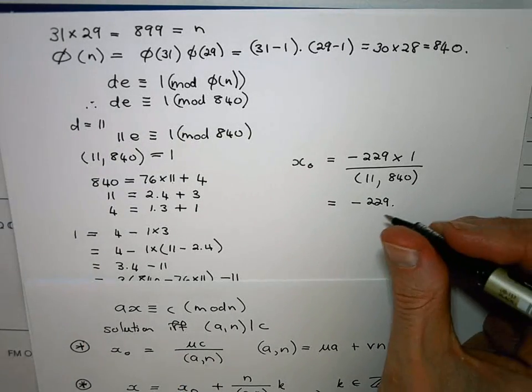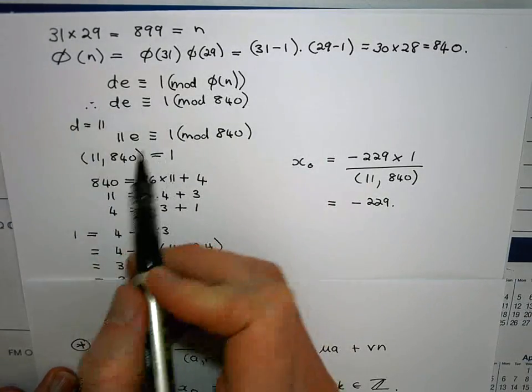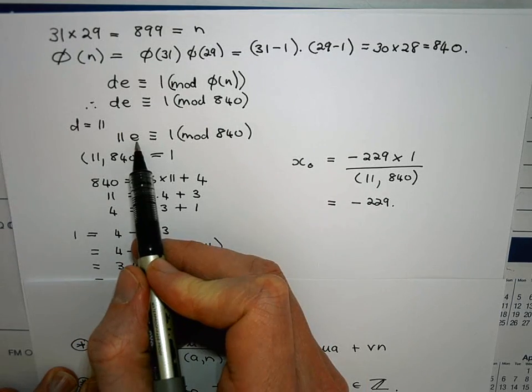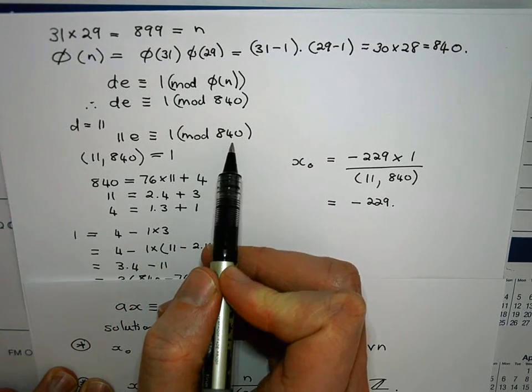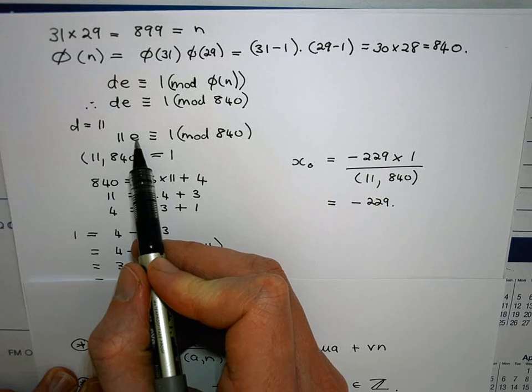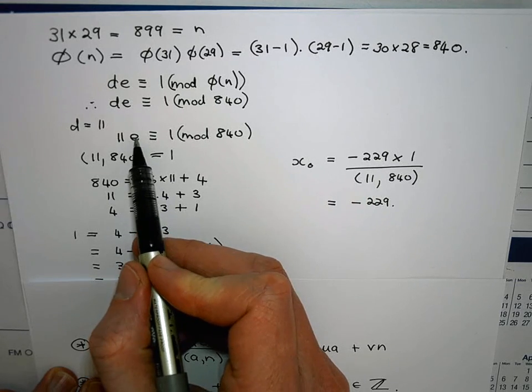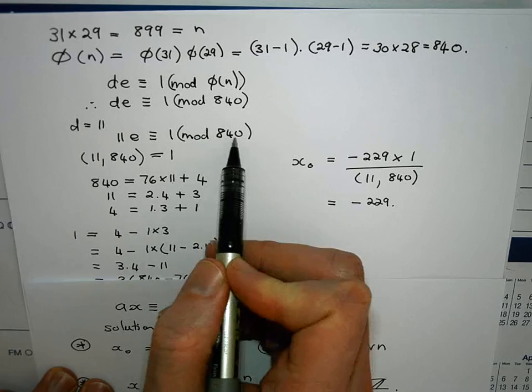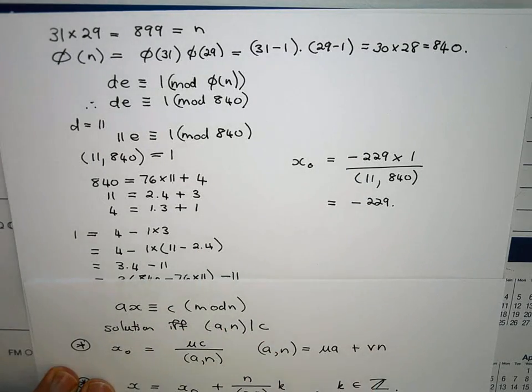Okay so that is a specific solution to this linear congruence over here, a value for e that would satisfy. But moreover we don't want just any value for e, we want one which is a remainder after division by 840.